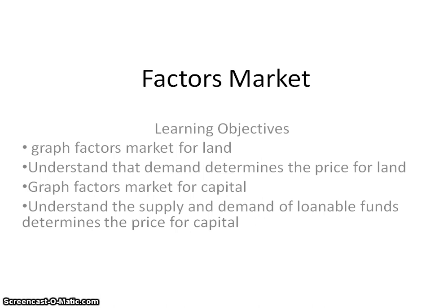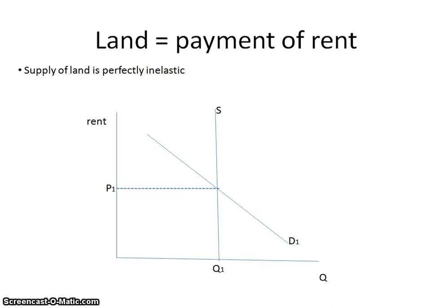While we're looking at the graph for land, we're going to understand that demand determines the price for land. The payment for land is rent, and as you can see in this graph here, you have a perfectly inelastic supply curve. By now, you should understand that the marginal revenue product of a resource determines the demand for that resource. The supply of land is unique because it is perfectly inelastic.